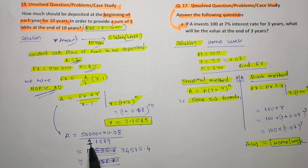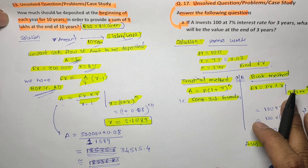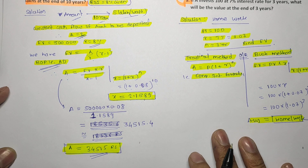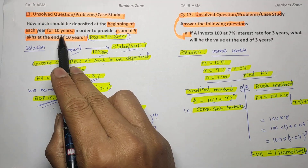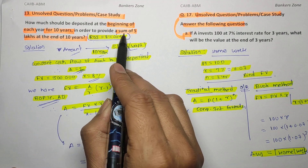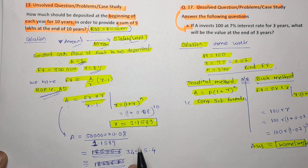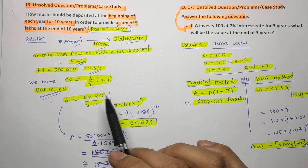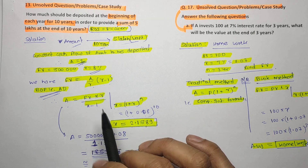Substituting: Future Value = 5 lakh, r = 0.08, x = 2.1589, so x − 1 = 1.1589. Solving this gives the answer as 34,515 rupees. That means if the customer deposits 34,515 rupees per year at the beginning of each year, after 10 years they will get a sum of 5 lakh rupees. This type of numerical is called a sinking fund.